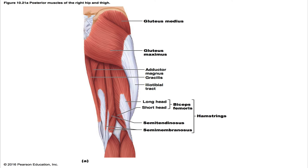The biceps femoris is the most lateral hamstring muscle, arising from two heads. The long head originates from the ischial tuberosity; the short head originates from the linea aspera, the lateral supracondylar line, and the distal femur. Its insertion by a common tendon forms the lateral border of the popliteal fossa, inserting into the head of the fibula and lateral condyle of the tibia. Its prime action is to extend the thighs and flex the knees, and it laterally rotates the leg when the knee is flexed. It's innervated by the tibial nerve to the long head and the common fibular nerve to the short head. The semitendinosus lies medial to the biceps femoris, originates from the ischial tuberosity in common with the long head of the biceps femoris, and inserts into the medial aspect of the upper tibial shaft. Its prime action is to extend the thighs and flex the knees; along with the semimembranosus, it medially rotates the leg, and is innervated by the tibial nerve.